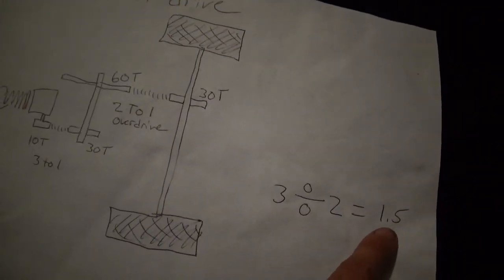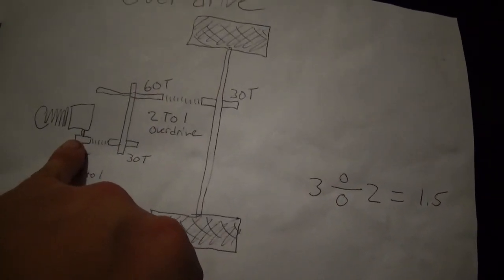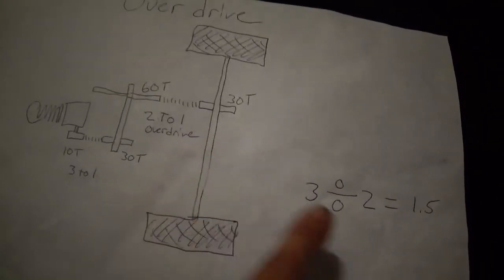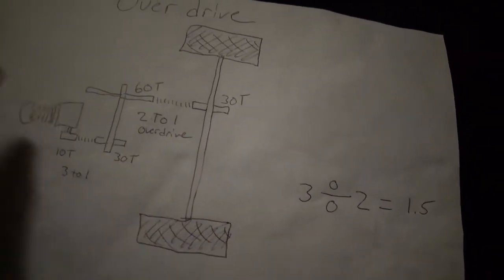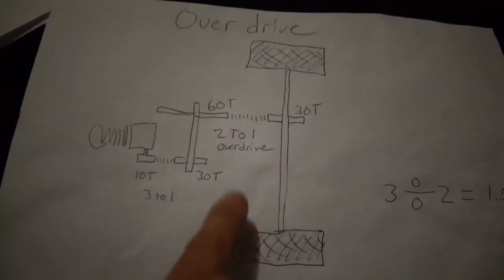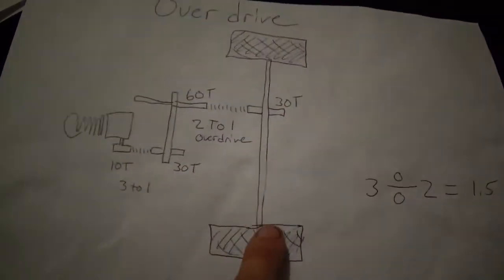Pretty much what you do now is you divide this ratio by this ratio. You're dividing instead of timesing it. So now you have a 1.5 ratio. So the engine's going to turn over one and a half times and the tires are going to turn one time.